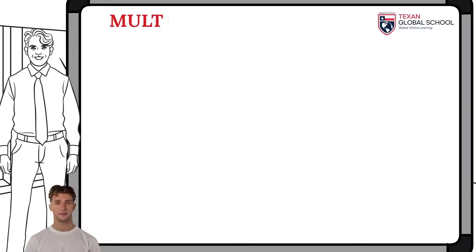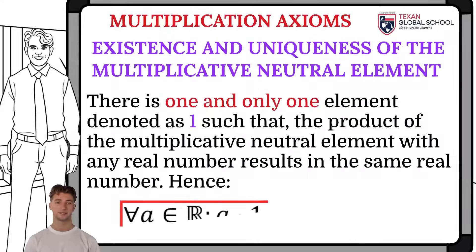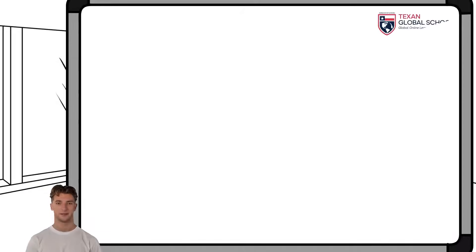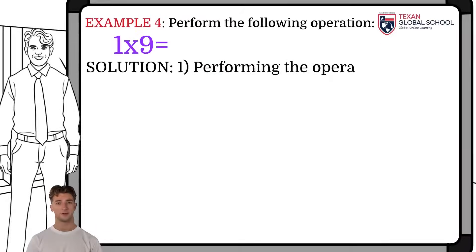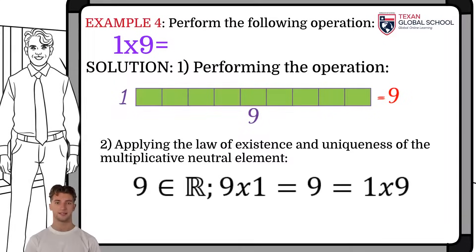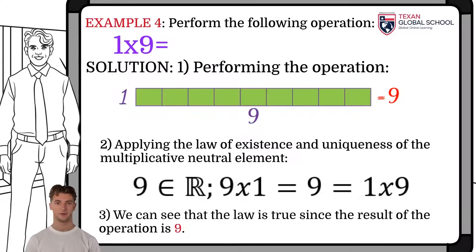Another axiom indicates that there is one and only one element denoted as one, such that the product of this multiplicative neutral element with any real number results in the same real number. This axiom is called the existence and uniqueness of the multiplicative neutral element. In the example, we perform the operation of one by nine. When drawing the boxes, we can see that we have one row with nine columns resulting in the real number nine. In this way, we can see that if we multiply one with any other real number, it will always result in the same real number.